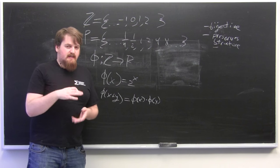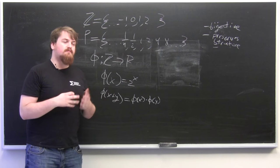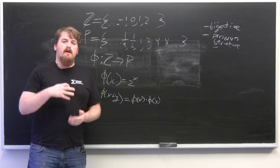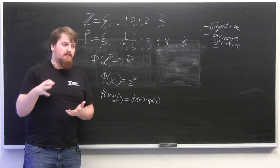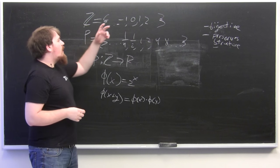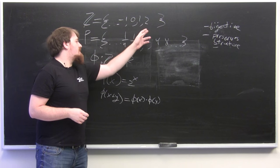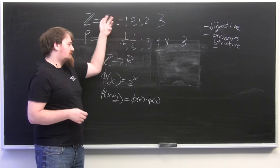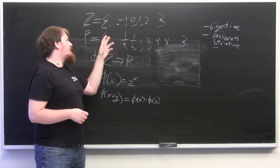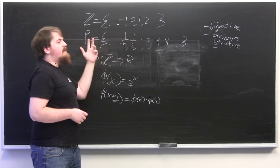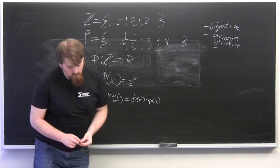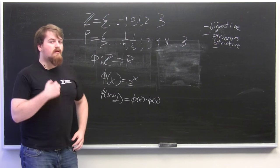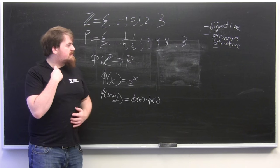Additionally, it has to send the inverse of every element to the inverse of the image of the original element. So in Z, 2 gets sent to 4, but negative 2, which is the inverse of 2 in Z, gets sent to 1 over 4, which is the inverse of 4 in P. So this is an isomorphism.